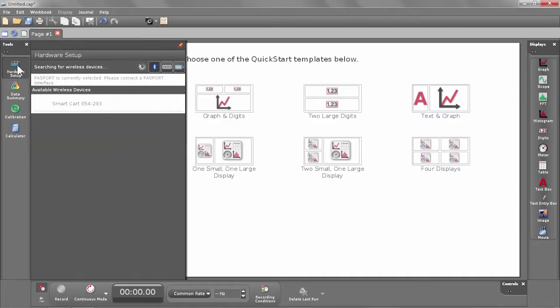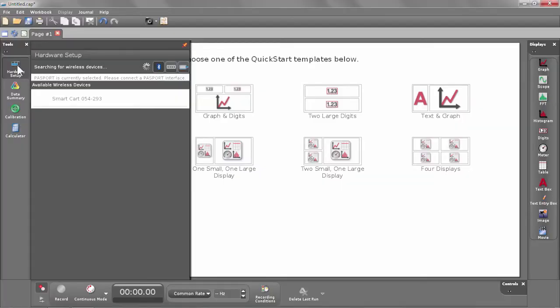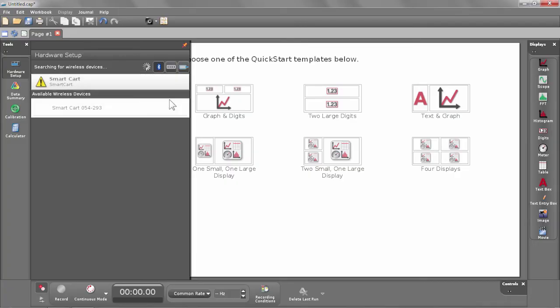Okay, so once the cart's turned on, it starts broadcasting via Bluetooth 4.0 Low Energy. And that's a very useful tool for this purpose because it allows the connection, the Bluetooth connection between the computer and the wireless smart cart itself to be very simple. In the software, all we do is we open up our hardware setup window like you see here. It lists the devices, the Bluetooth devices here under that available wireless devices heading. All you do is just click once and then it connects via Bluetooth to that wireless smart cart.